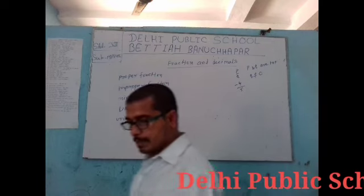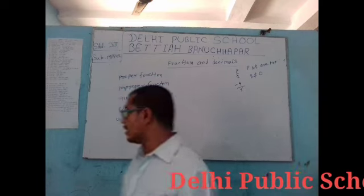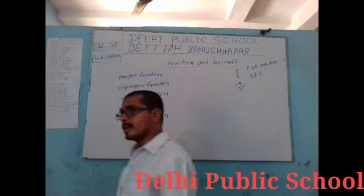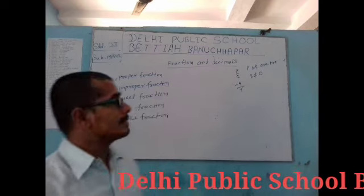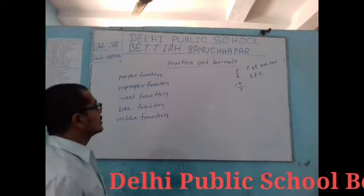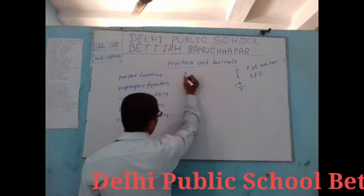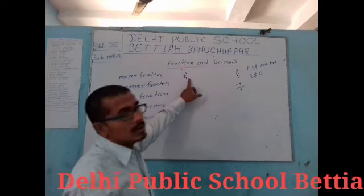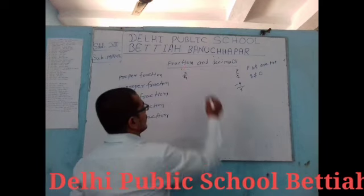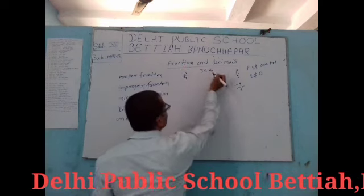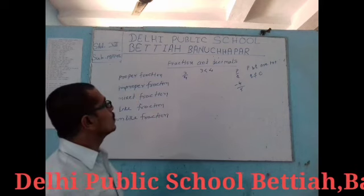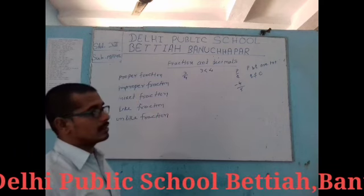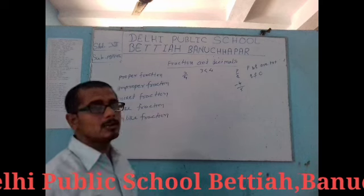The first topic we have to know is what is called a proper fraction. If in a fraction the numerator is less than the denominator — for example, 3 by 4, where the numerator is 3 and the denominator is 4, and 3 is less than 4 — then such a fraction is called a proper fraction. The numerator should be less than the denominator.